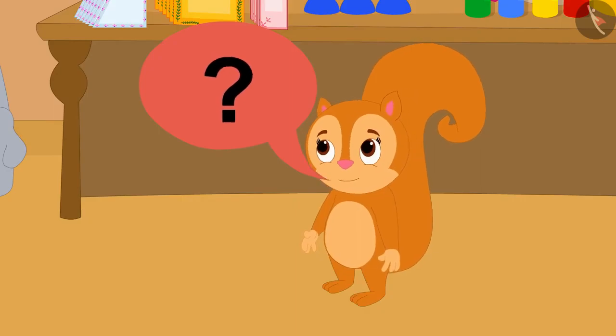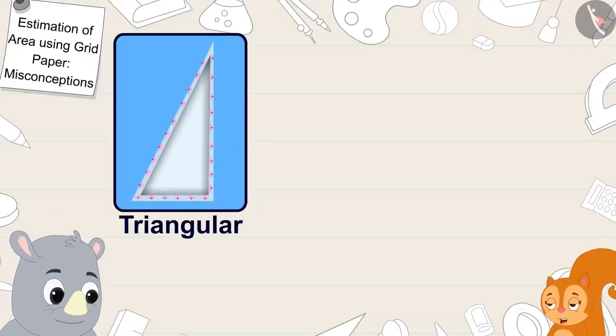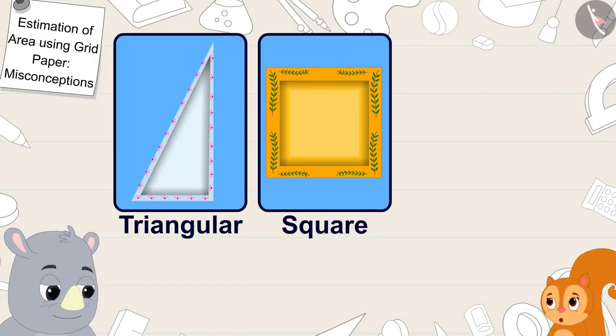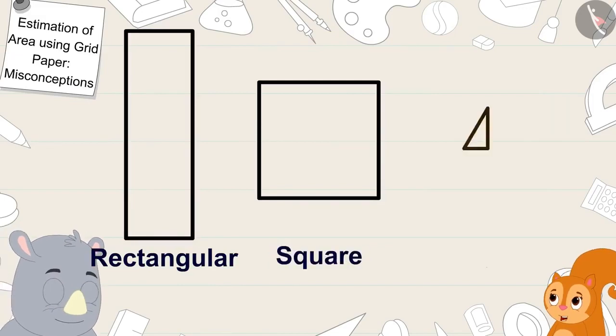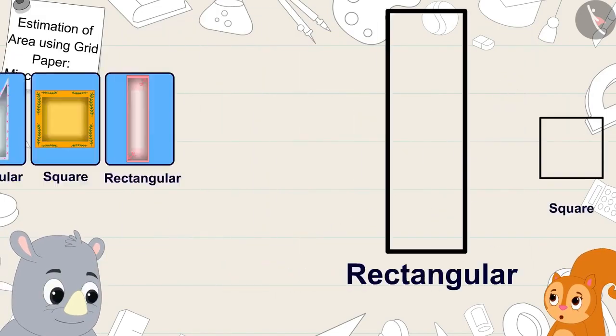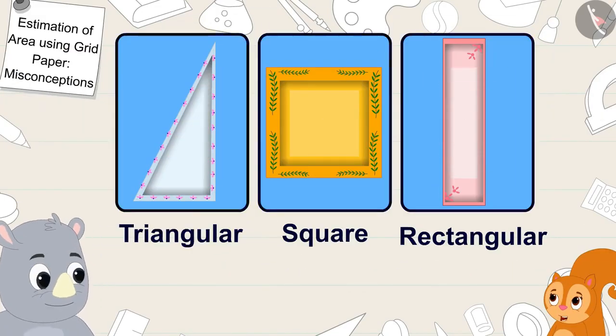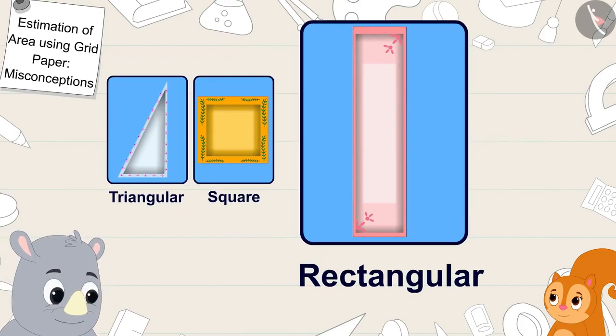But how is that possible Gaggoo? This plate is triangular, this one is square shaped, and this plate is rectangular. Because rectangle is bigger than square and triangle, the rectangular plate is bigger than both these plates, Chanda said to Gaggoo.